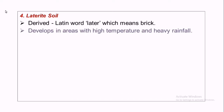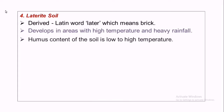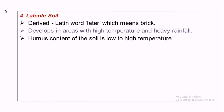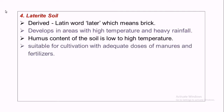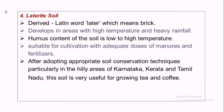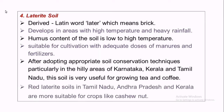The humus content of laterite soil is low because of the high temperature. It is suitable for cultivation with adequate doses of manures and fertilizers. After appropriate soil conservation techniques, particularly in hilly areas of Karnataka, Kerala, and Tamil Nadu, this soil is useful for growing tea and coffee, and also suitable for crops like cashew nut in Andhra Pradesh, Kerala, and Tamil Nadu.